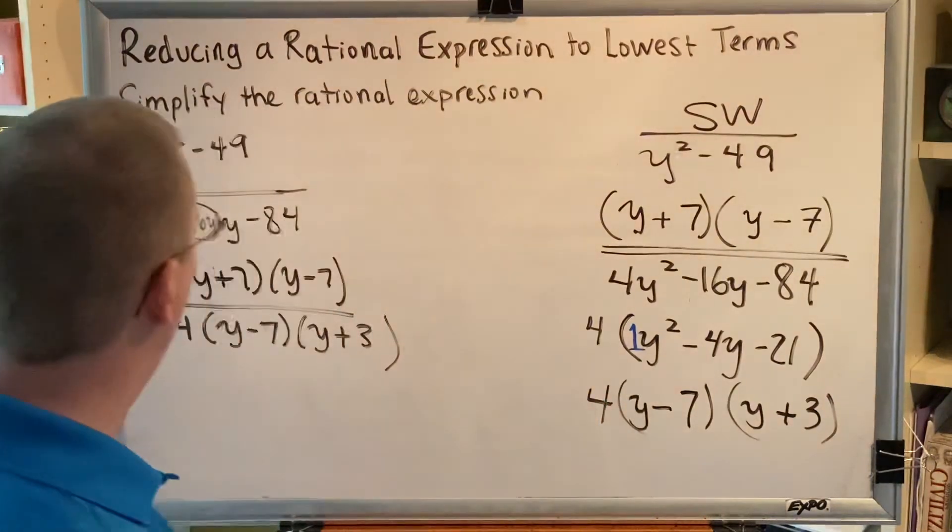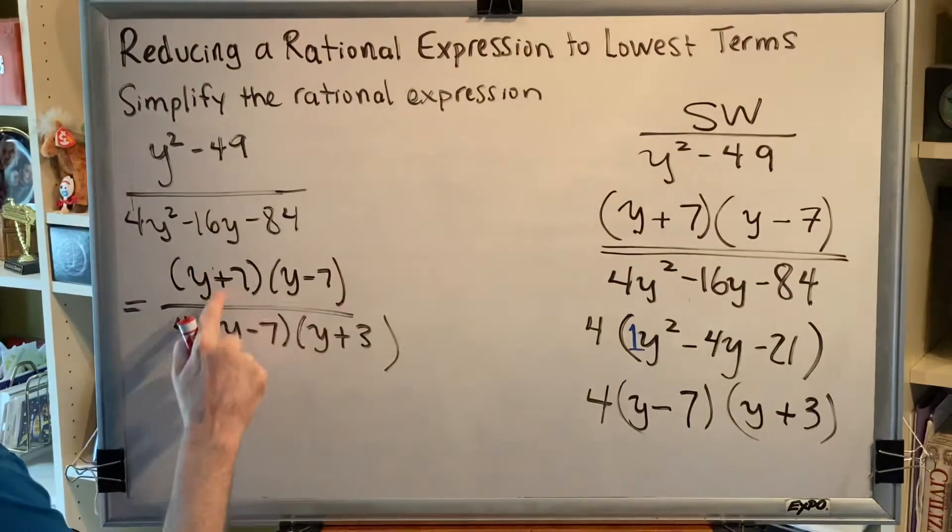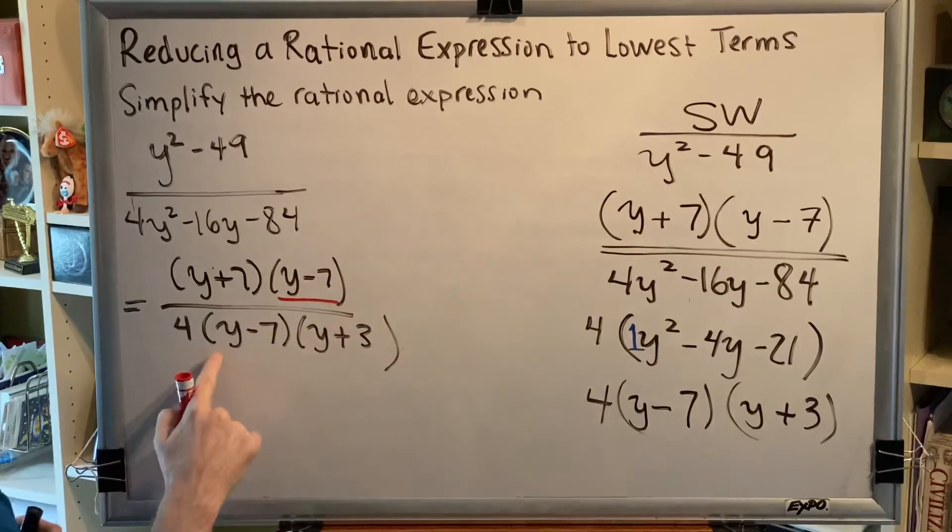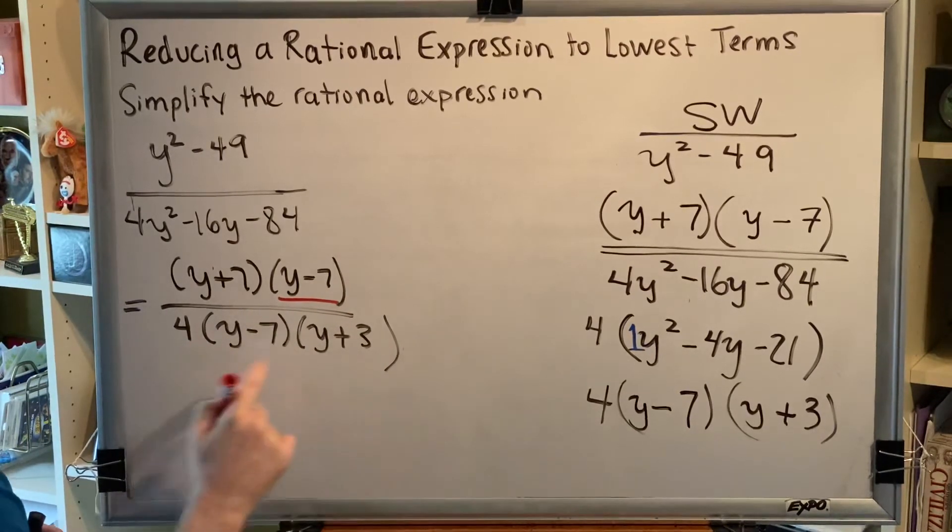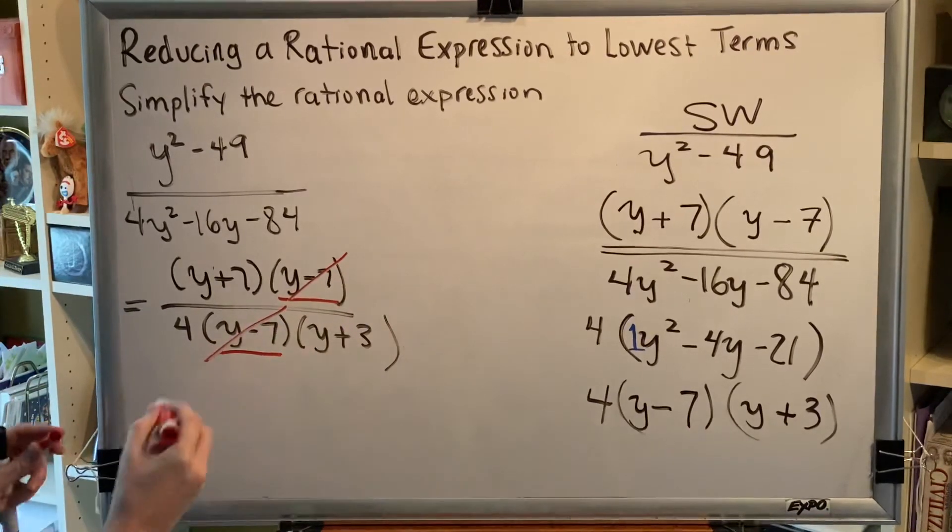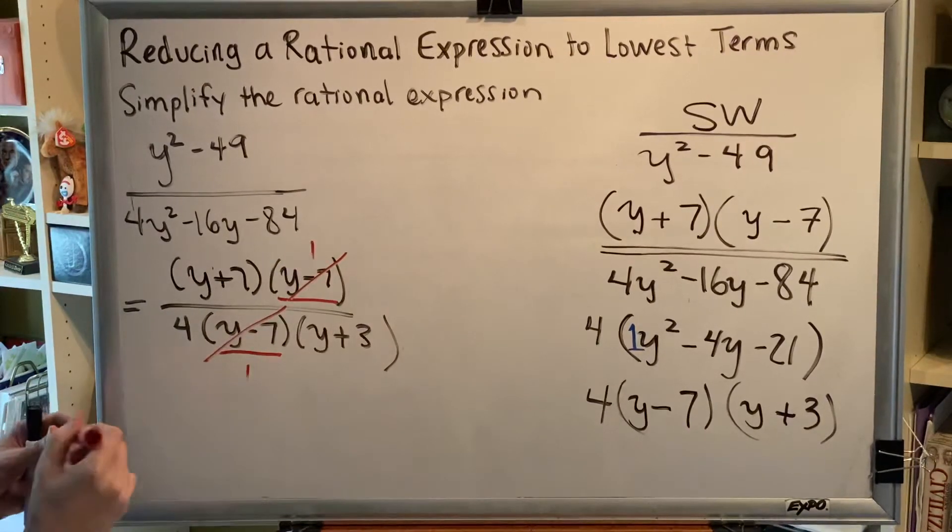This y minus 7 is multiplying by the y plus 7. So this is a factor. This y minus 7 is multiplying by both the 4 and the y plus 3. So this is a factor. And because they match, we cancel them to the number 1.